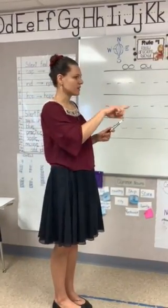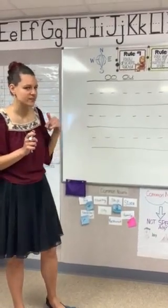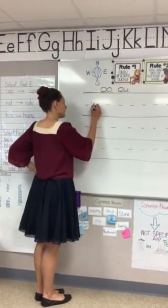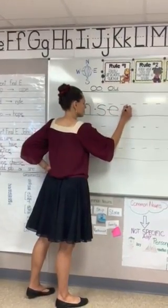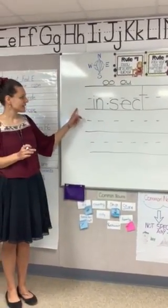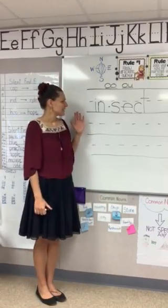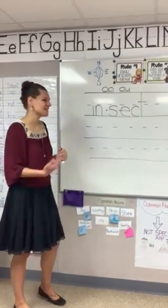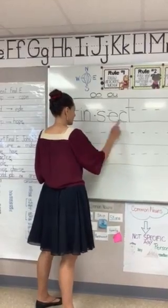Alright, put your finger under the first phonogram in insect so you can tell me how to write it. Parents, if you need to pause the video for your child to finish, go ahead and do that. Alright, what do we need to write to spell insect? Good. Make sure yours looks like mine. Is there anything in our word that we need to mark? There's nothing we need to mark. So let's just say the sounds and put them together.